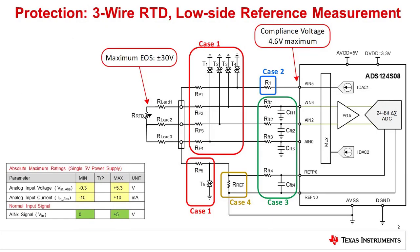This slide reviews the basic protection circuit for the IDAC output current, the reference voltage input, and the analog inputs. The slide shows each different region of the circuit circled in different colors to indicate that different values are selected for protection. Case 1 relates to selecting the TVS diode and its associated current limiting resistor. Case 2 relates to selecting the resistor R1 to protect the IDAC circuit. Ideally, R1 would be very large, but this would impact the compliance of the current source. Case 3 relates to the protection and filtering of the input signal channel and voltage reference.